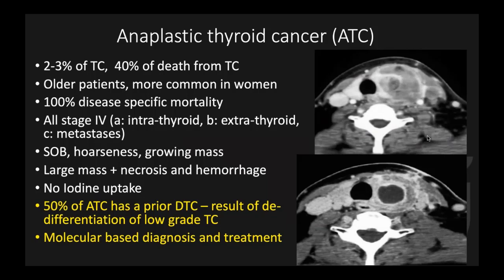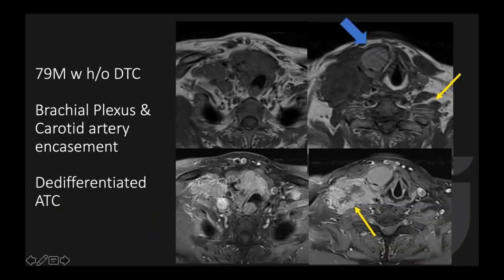Anaplastic thyroid cancer is a bad one. It is only 2 to 3 percent of thyroid cancer but accounts for 40 percent of deaths from thyroid cancer. Usually in older patients, more commonly in women, with 100 percent disease-specific mortality. All anaplastic thyroid cancers are stage 4. Patients usually present with symptoms: shortness of breath, hoarseness, or rapidly growing neck mass. Imaging may show a diffuse large mass with infiltrative appearance, central necrosis, or hemorrhage. There is no iodine uptake, so no iodine treatment. Many anaplastic thyroid cancers arise from prior differentiated thyroid cancer — a de-differentiation from low-grade to high-grade cancer.